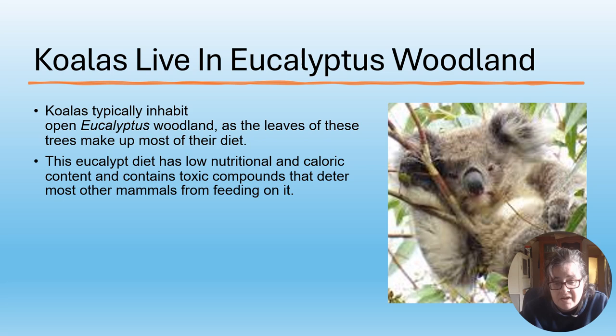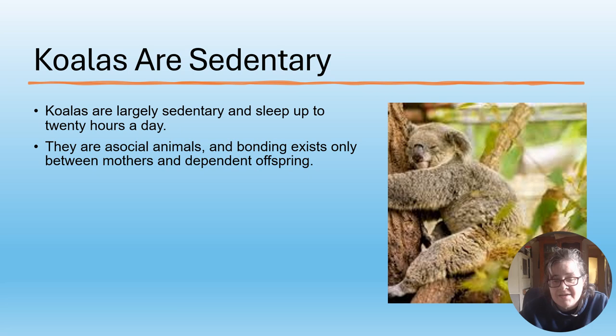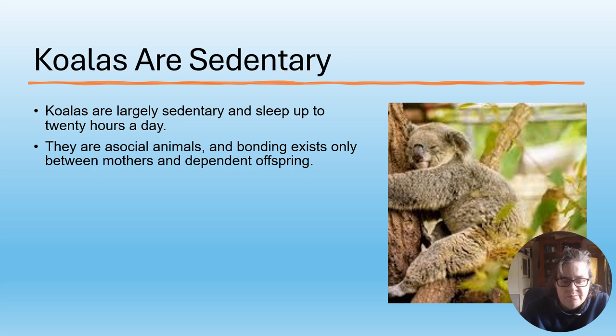The eucalyptus diet has low nutritional and caloric content and contains toxic compounds that deter other mammals from feeding on it, but koalas have adaptations to eat eucalyptus leaves. Koalas are sedentary - they lay about all day, pretty much eating, sleeping and pooping. They sleep up to 20 hours a day. They are asocial - sometimes hanging about in small groups or with their joeys or when mating, but for the most part solitary with other koalas possibly nearby on other branches.